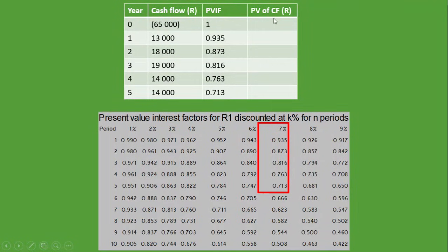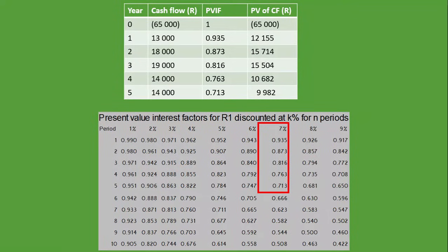For the present value of cash flows, we multiply cash flows by the present value interest factor. Those have been calculated and plugged in. The 65,000 rand is negative because we are spending that money to buy the machine — the initial investment is always negative as it represents an outflow.